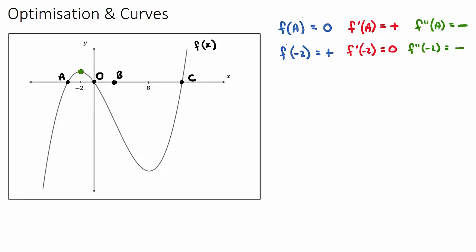Hopefully you can see the pattern. f(0) — when x is 0 at the origin, the y value will also be 0. f'(0) is the slope at the origin, and it is sloping down, so this will be negative. The double derivative, which is concavity at 0, will still be part of the negative concavity section, so the concavity is also negative.